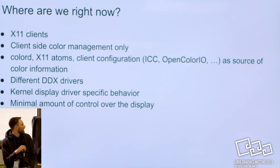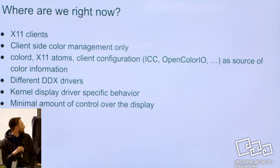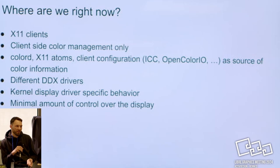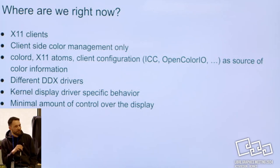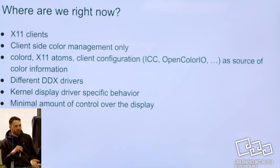Clients might look at the X11 atom, they might look at colord, and they probably have some own configuration — I think all applications right now have a UI to choose the ICC profile and you can ignore whatever is set on the display. On the lower levels with X11 you get different backends, nowadays it's mostly KMS, but KMS is a bit weird in that you would hope whatever the compositor is doing is what the display receives, but in reality there's a lot of state that can affect whatever is going out on the cable, and all of this can influence how color is really managed.